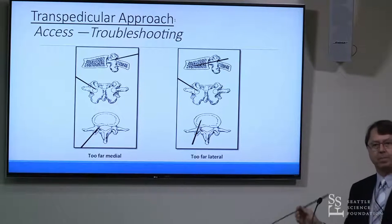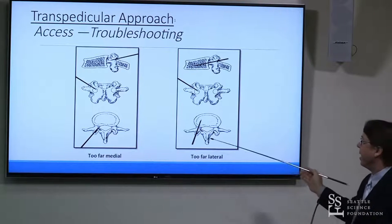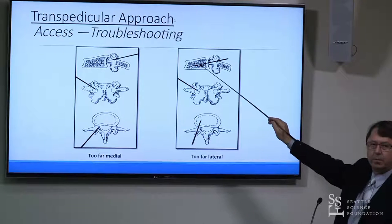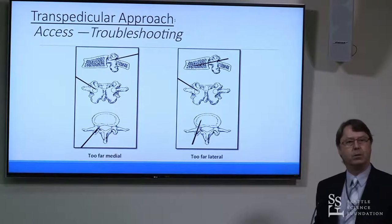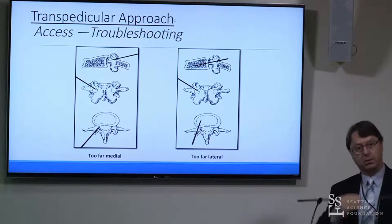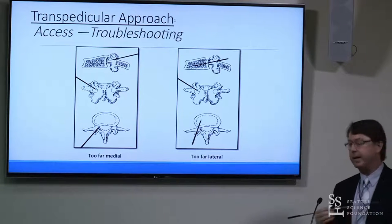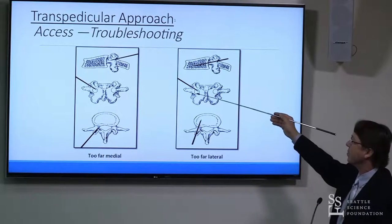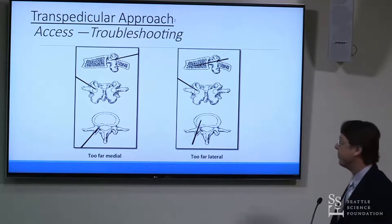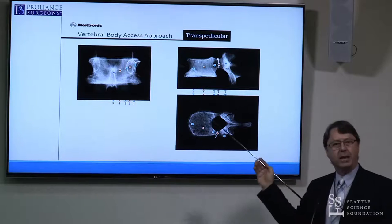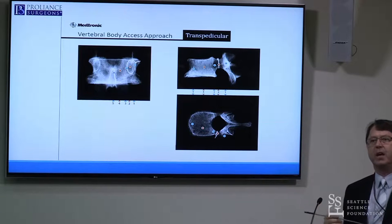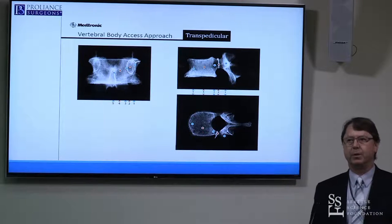Similarly, when you are too vertical in your orientation, you will end up too lateral. You may be at the medial border of the pedicle on the AP but already way into the vertebral body on the lateral. Your augmentation is then more likely to result in a cement leak, and your balloon may go external to the vertebral body because you are sitting in the fracture bone on the lateral cortical wall, whereas you would ideally want to be in the center.